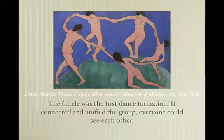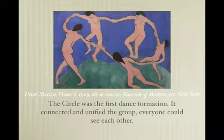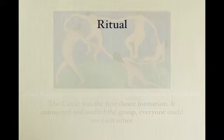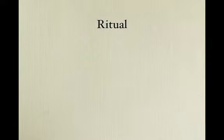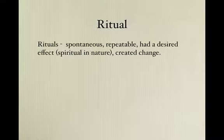Here's a beautiful picture — Matisse's circle. The circle was the first dance formation because it unified groups. You can probably remember in your lives being in a circle where everyone could see each other, so everyone could be on the same page and also have protection from whatever's on the outside of the circle. Rituals were very important in dance — you probably have some of your own rituals.